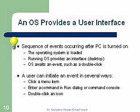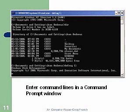A user can initiate an event in several ways: clicking on a menu item using your mouse, entering a command in the Run dialog directly, or double-clicking on any of the icons available. You can also enter command lines in a command prompt window, where you can open a command prompt and enter commands directly. This emulates the DOS mode.